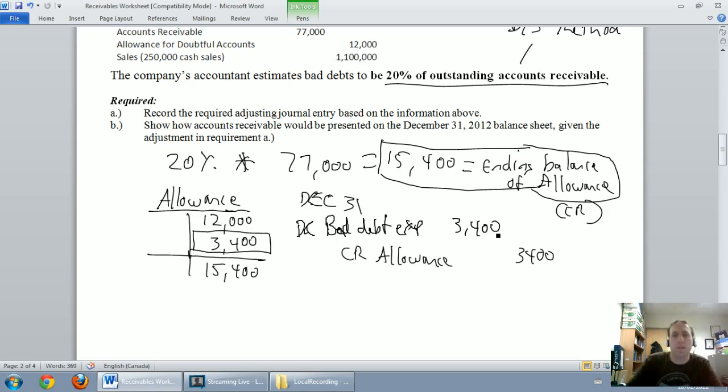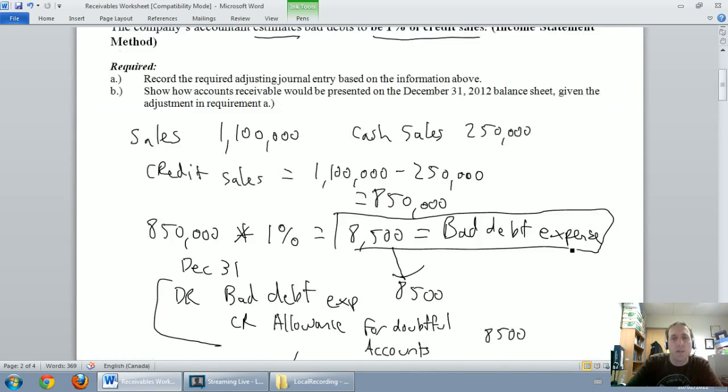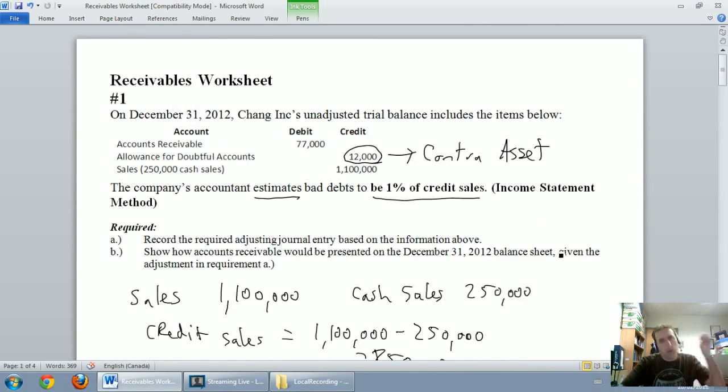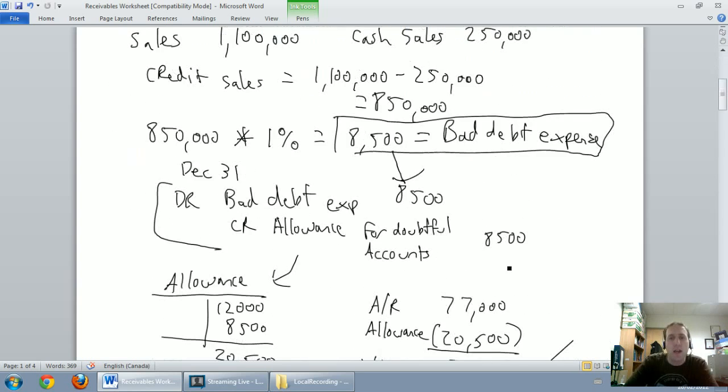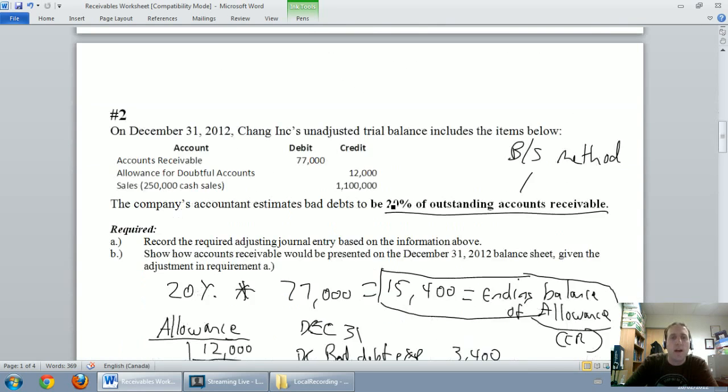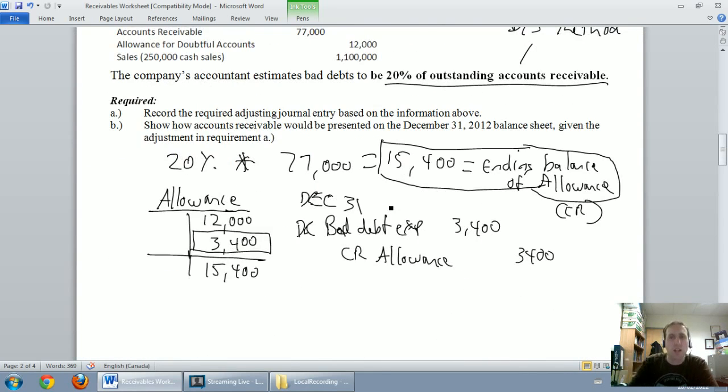So, just to reiterate the difference, when we're doing the income statement method as we did in the video prior to this, we said the amount we calculate is our bad debt expense. Plug it into the journal entry. When we calculate based on a percentage of outstanding accounts receivable, that amount we calculate is the ending balance of our allowance for doubtful accounts. That amount needs to go into a T account. And then we kind of work backwards to figure out our journal entry.